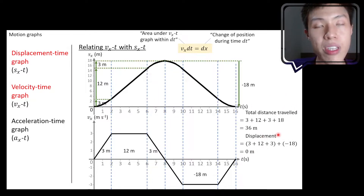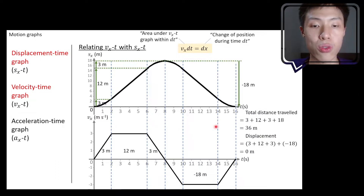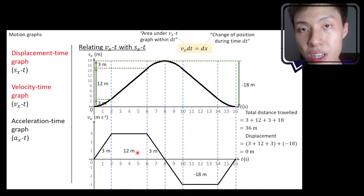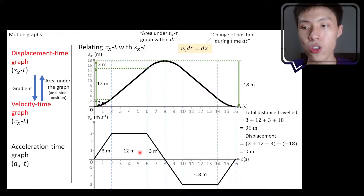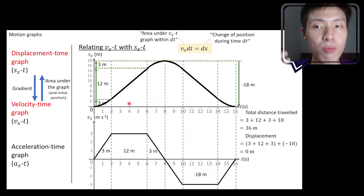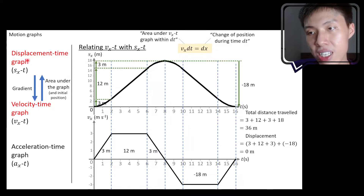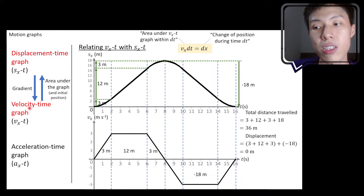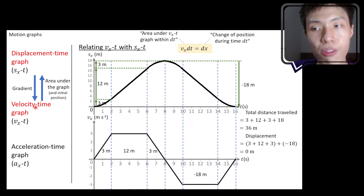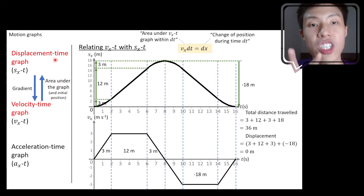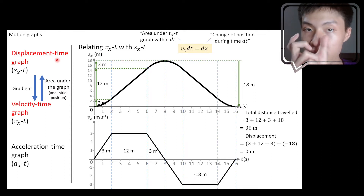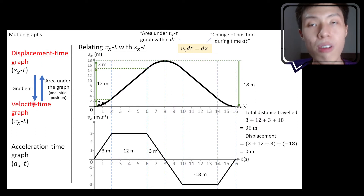Total distance traveled and displacement are the questions most often asked. So you now know how to get information about the displacement-time graph from the velocity-time graph using the idea of area under the graph. To summarize: to relate the displacement-time graph to velocity, determine the gradient of the displacement-time graph. But to get from the velocity-time graph to displacement, find the area under the graph for a certain time interval, and you are able to determine the change of position or the displacement within that time interval. This is how we relate between the displacement-time graph and the velocity-time graph.